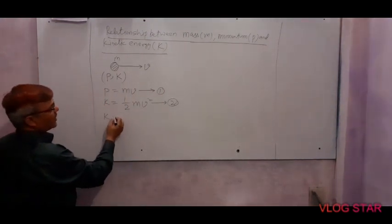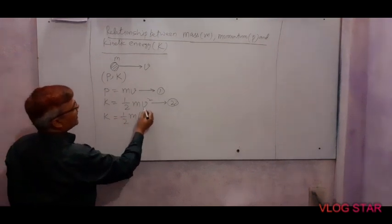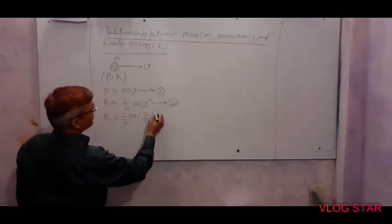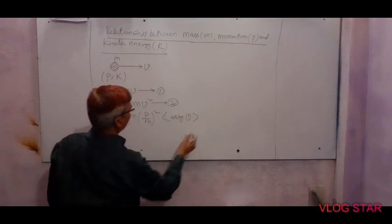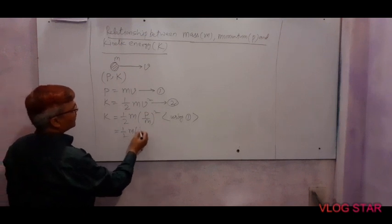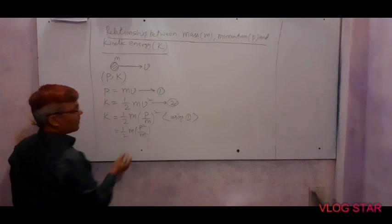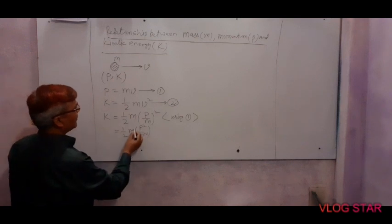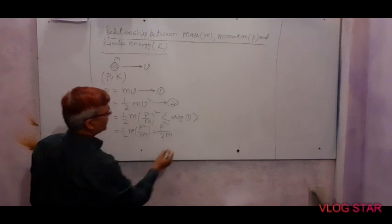Equation two can be written as k equals half m times, in place of v I am going to write p upon m. Using the first equation, after simplification one m cancels because m and here m square. It means we will get p squared divided by 2m.